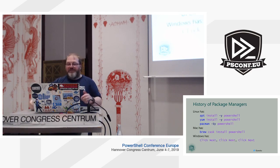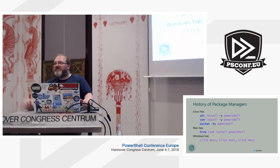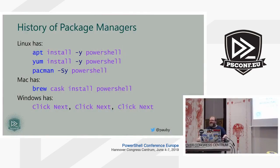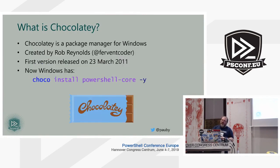We've always had to download the installers — you all know the pain: click next, next, next, until you're nearly finished, then click finish. And when you want to update it, you've got to do the same thing again. So Chocolatey was born from that. Chocolatey is a package manager for Windows, in the same sense that apt, yum, and pacman are for Linux, and Homebrew is for Macs.